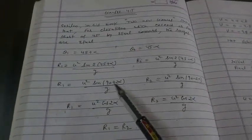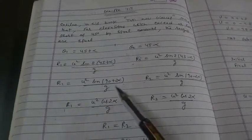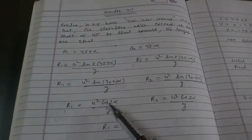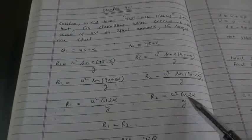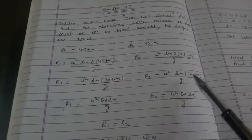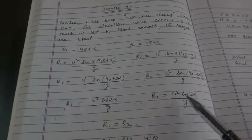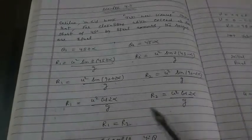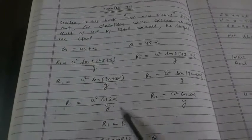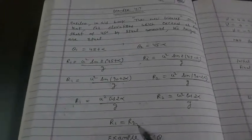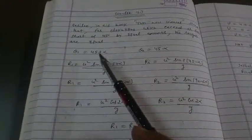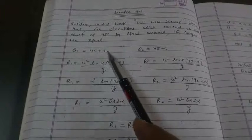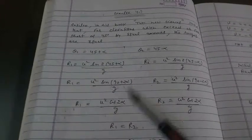Sin 90 plus theta equals cos theta, so sin 90 plus 2 alpha equals cos 2 alpha. Sin 90 minus theta equals cos theta, so sin 90 minus 2 alpha equals cos 2 alpha. Now you can see that R1 and R2 are equal. R1 equals R2. This proves that if the angle of elevation is greater than 45 degrees or less than 45 degrees, then the range is the same.